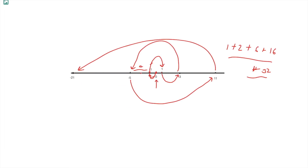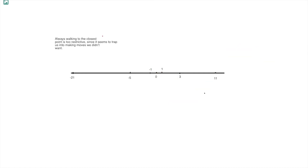You might say the problem occurs because we chose 0 as the starting point — instead choose a different starting point. But if the points were arranged horizontally, or if you displaced one point by a little extra space, the zigzag motion would occur again regardless of starting point. So the issue is not just the starting point.